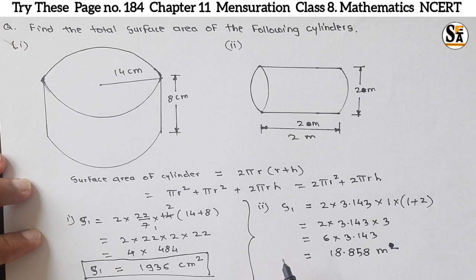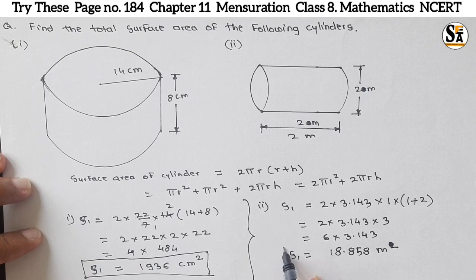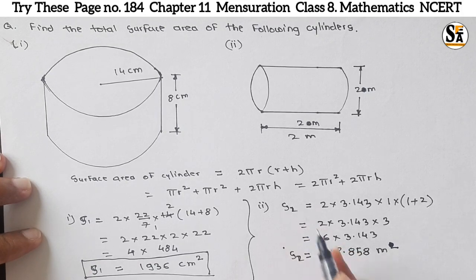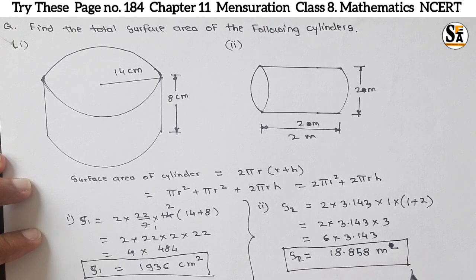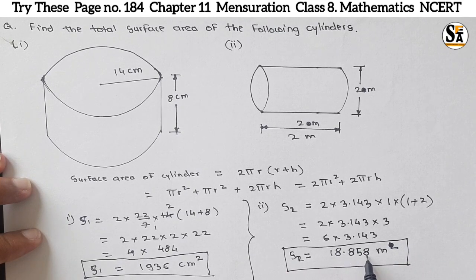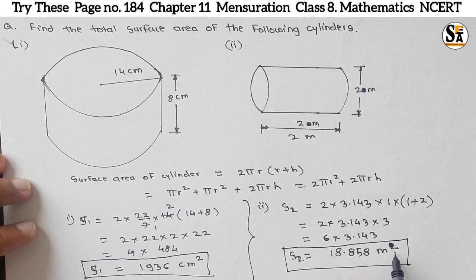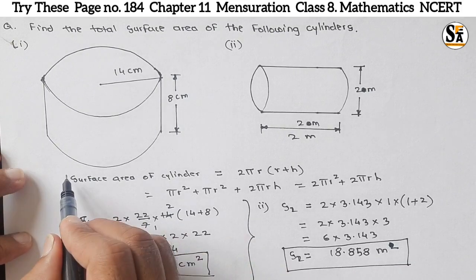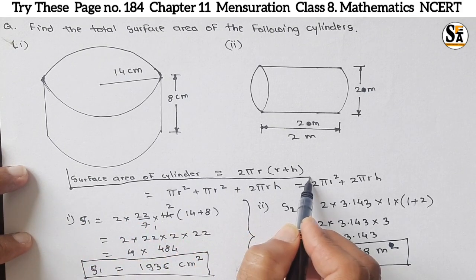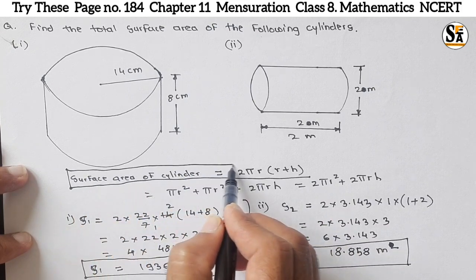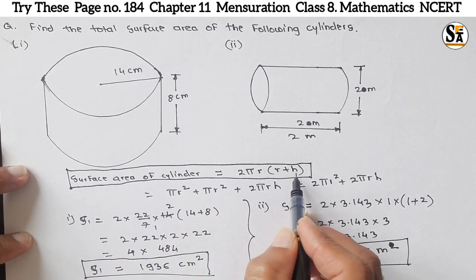So S₂ will be 18.858 meter square. In first example unit is centimeter and in second example unit is meter. Thus remember the formula: surface area of cylinder is equal to 2πr(r+h).